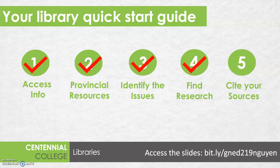So through this series of videos we've looked at how you can access information using the library website, how you can find resources for your provincial resources assignment, how you can identify some key issues to use as subtopics for your research assignment, how you can find additional research to support the subtopics in your research assignment, and finally how you can cite the information that you found through APA.